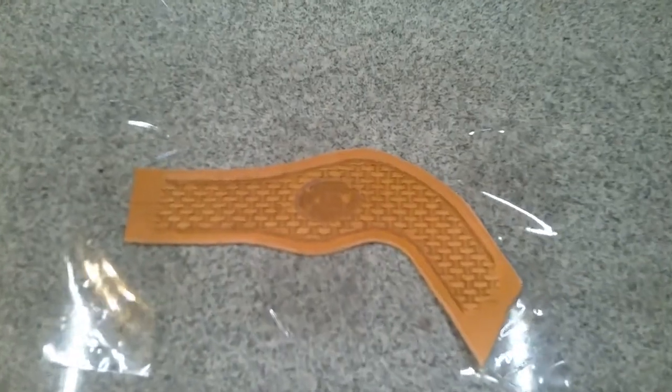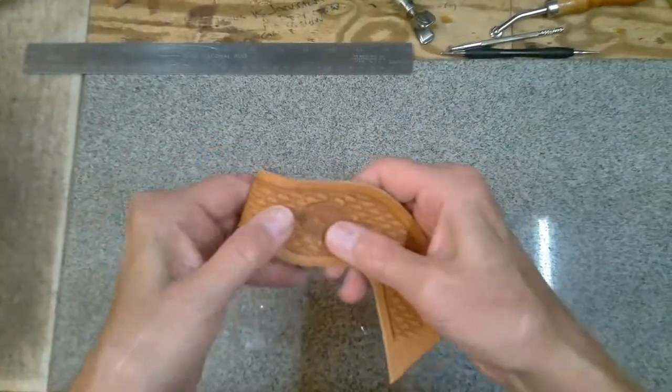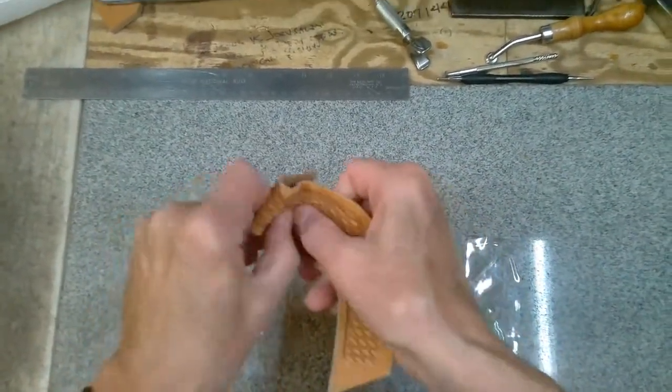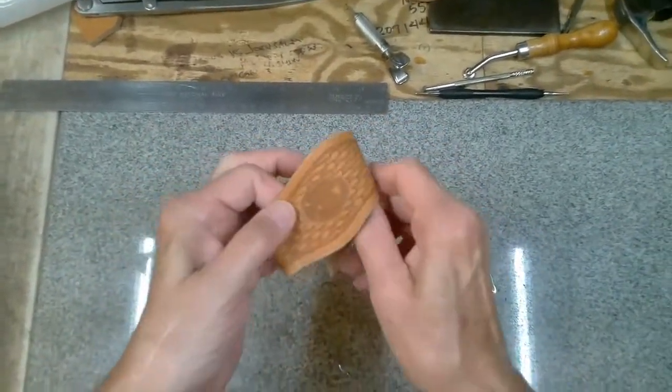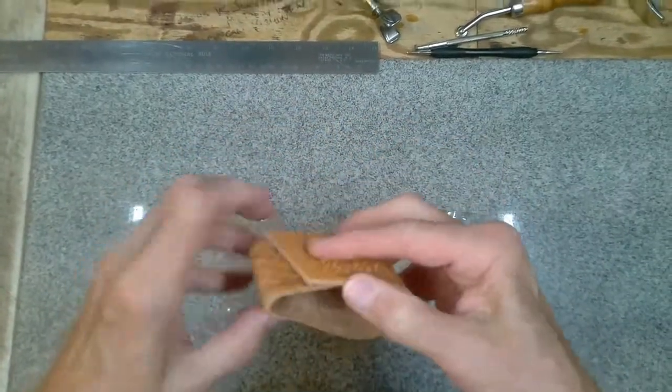When the basket weave design is done, I shape the holster loop and allow it to dry. This will help the loop lay nicely on the holster when assembled.